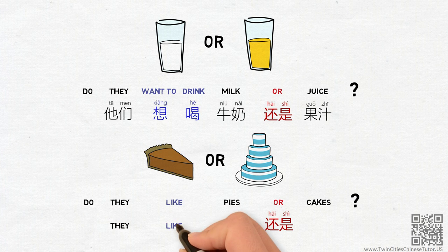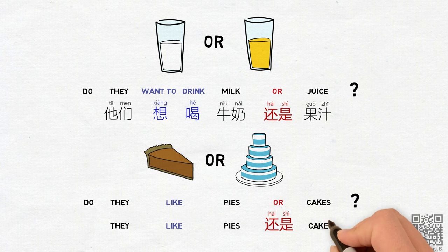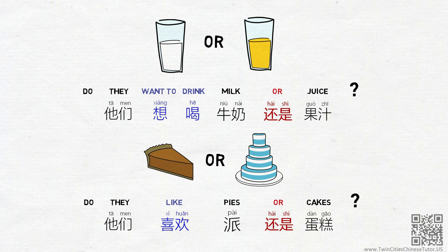And, They like pies 还是 cakes? Or in Chinese, 他们喜欢派还是蛋糕? Did you get them right?